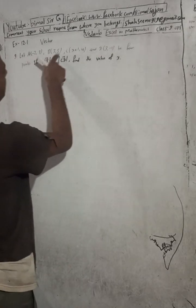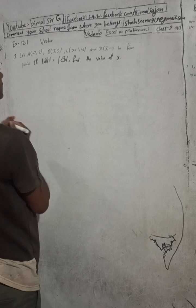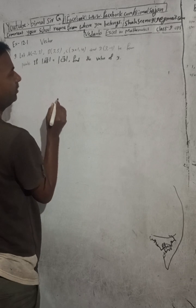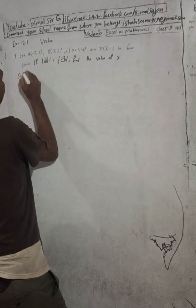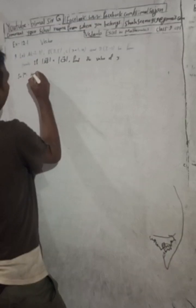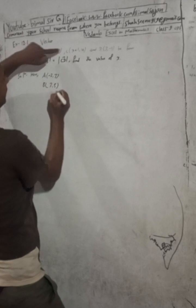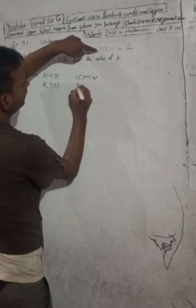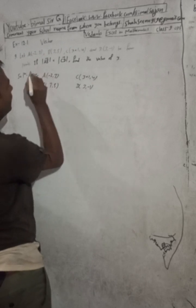The question is: let A(-2, 3), B(3, 5), C(x+1, 4), and D(3, -1) be 4 points. If the magnitude of vector AB is equal to the magnitude of vector CD, find the value of x. So here: A is (-2, 3), B is (3, 5), C is (x+1, 4), and D is (3, -1).